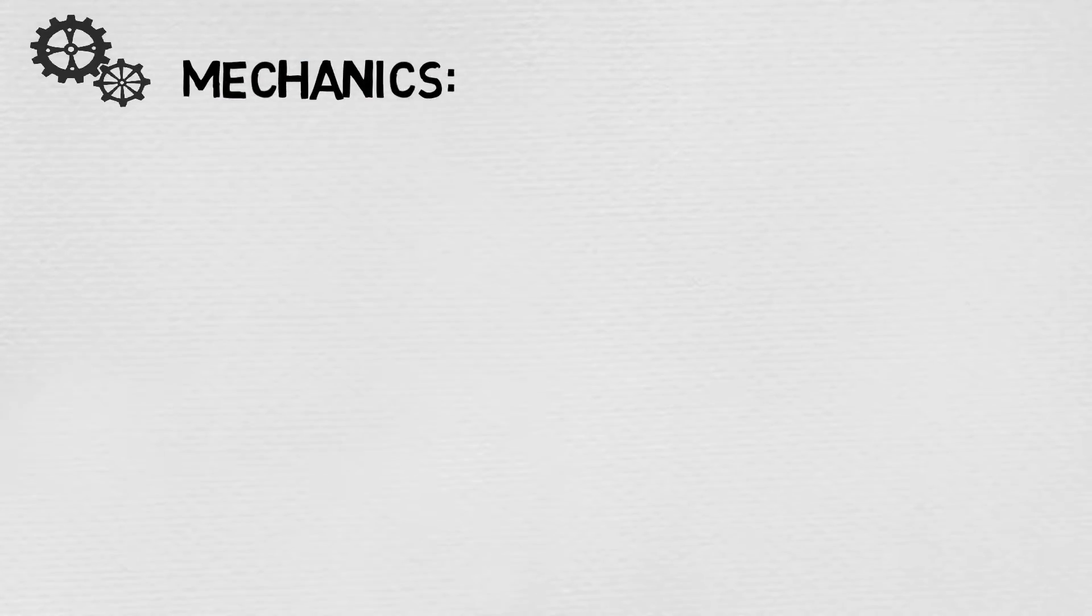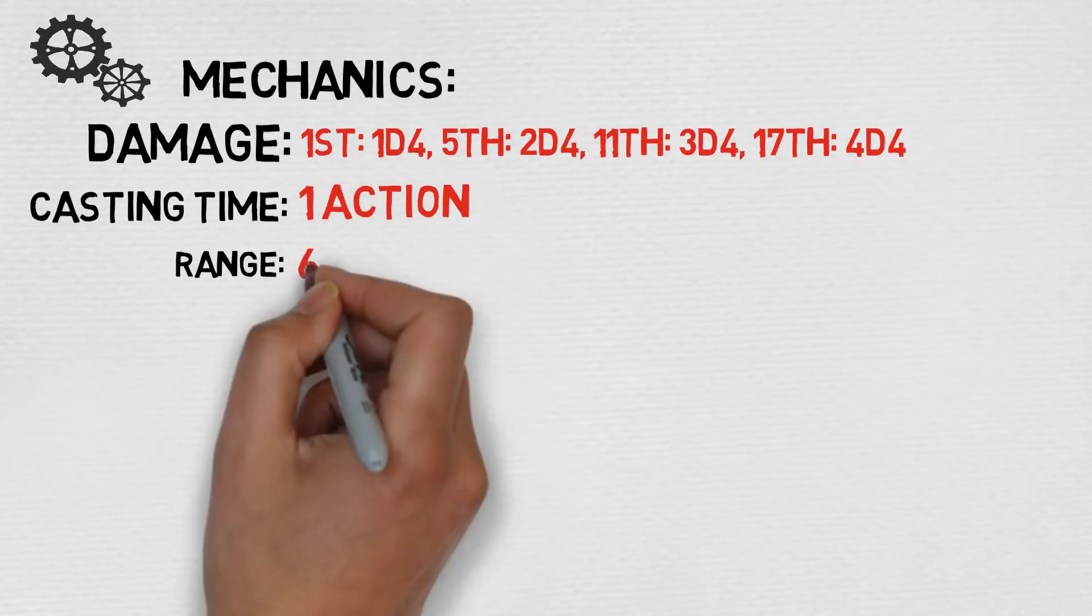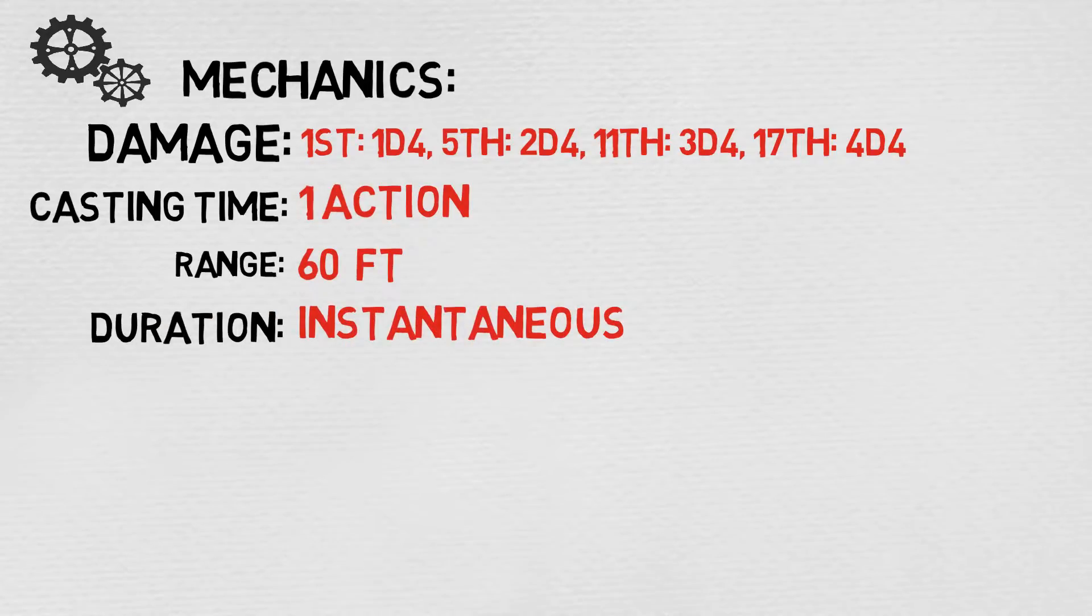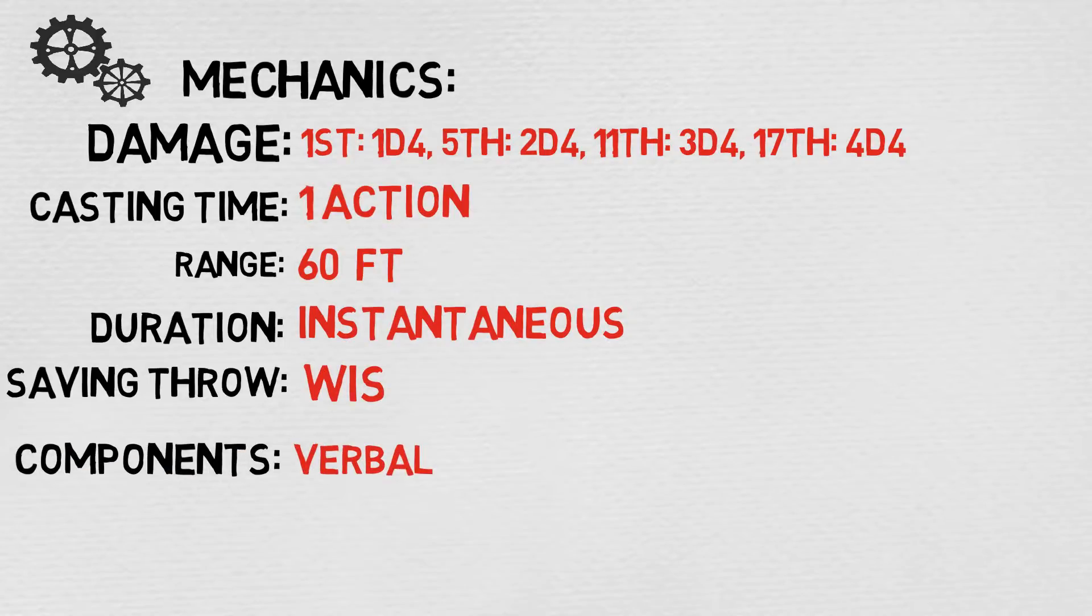Now let's take a quick look at some mechanics. Your damage die is a d4, which isn't great—as a matter of fact it is the worst damage die out of all the cantrips. The cast time is one action, the range is 60 feet, the duration is instantaneous, the saving throw is wisdom, the components are exclusively verbal, the school is enchantment, and the damage type is psychic.